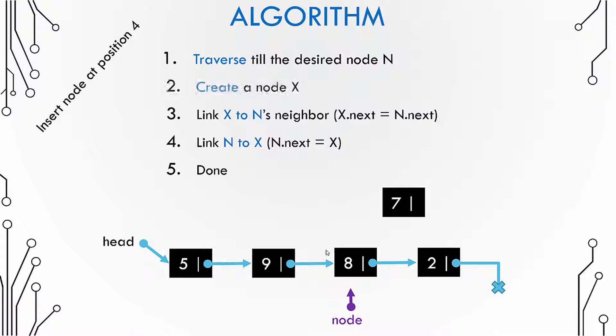So hence we go till the node 8 that means we traverse till the node 8 and then the next step is to create the new node. Now our goal is to point 8 to 7 and then point 7 to 2. How do you do it? Well you already know the address of this node 2 which is pointed by this node 8. So basically you can just use this link and then link this node 7 to 2.